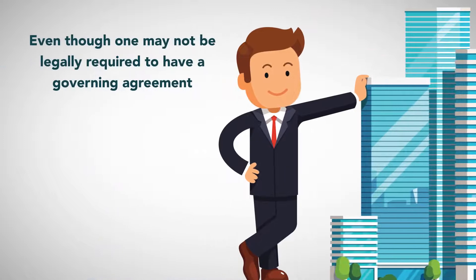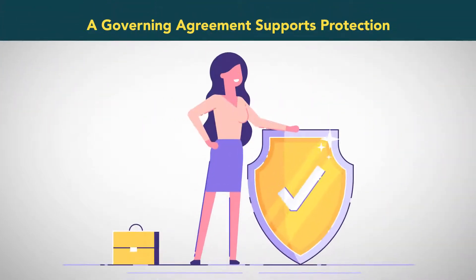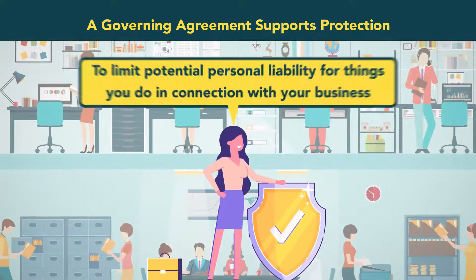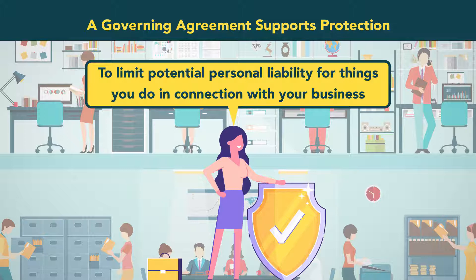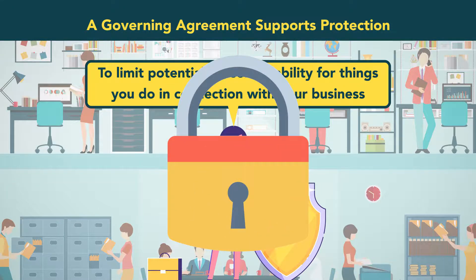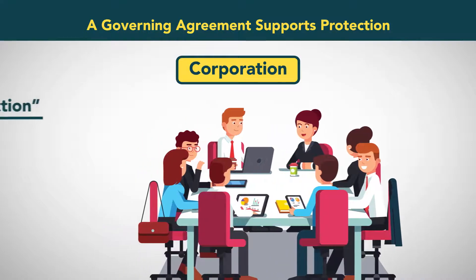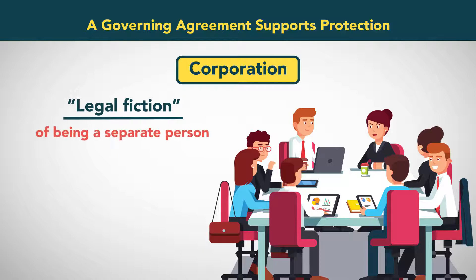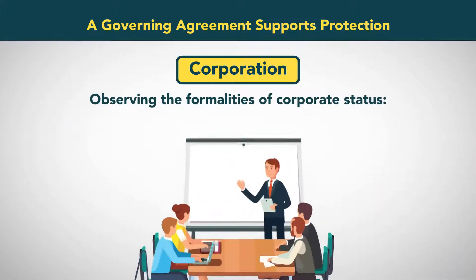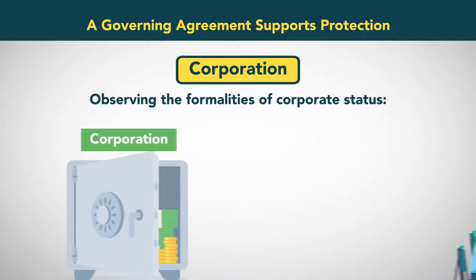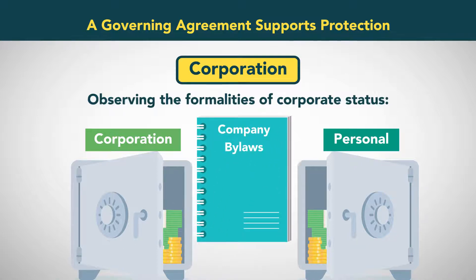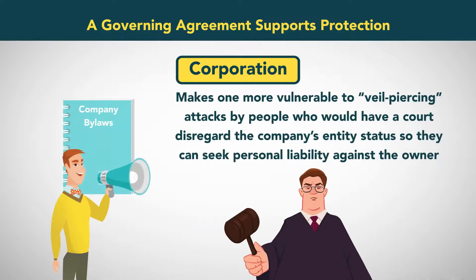Aside from the sole proprietorship, even though one may not legally be required to have a governing agreement, it's still prudent to have one. A governing agreement supports protection. One of the reasons to create a company as a legal entity is to limit potential personal liability. This protection is not automatic or absolute, and for corporations in particular, one needs to take specific actions to preserve it. A corporation must maintain the legal fiction of being a separate person—observing formalities like holding regular meetings, maintaining minutes, keeping corporate funds separate, and having bylaws. A lack of bylaws, or oral instead of written bylaws, makes one more vulnerable to veil-piercing attacks, where a court disregards the company's entity status so that personal liability can be sought against the owner.